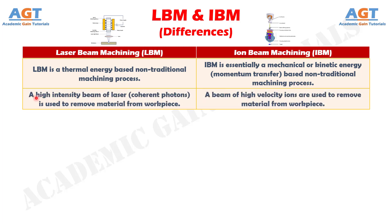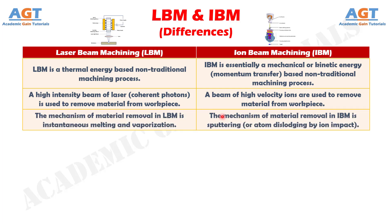Number 2. In laser beam machining, a high-intensity beam of laser, coherent photons, is used to remove material from the workpiece, whereas in ion beam machining, a beam of high-velocity ions are used to remove material from the workpiece.